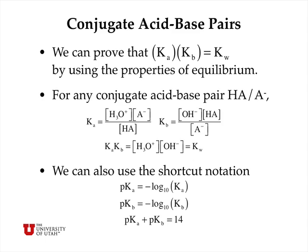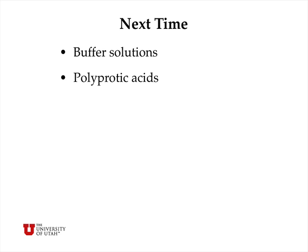We can prove that Ka × Kb = Kw by multiplying out the Ka and Kb expressions. The acid concentrations cancel in numerator and denominator, and the conjugate base concentrations cancel as well, leaving Ka × Kb equal to the hydronium ion times the hydroxide ion concentration, which is Kw. A useful shortcut is that pKa + pKb = 14. Next time, we will consider buffer solutions and polyprotic acids.